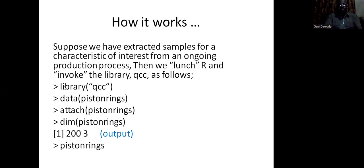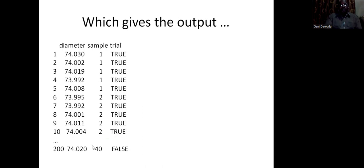When you use this line of code to evoke the library of QCC, it tells it that you are using the data Piston Rings. Then attach Piston Rings. If you are not sure, check by giving this command to give you the dimension of Piston Rings. If it is properly done, it will give you 200 by 3. Then you may even look at Piston Rings.